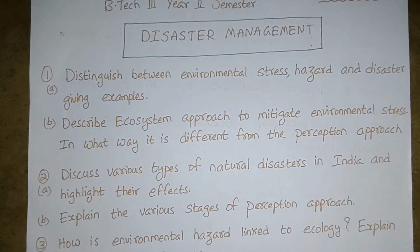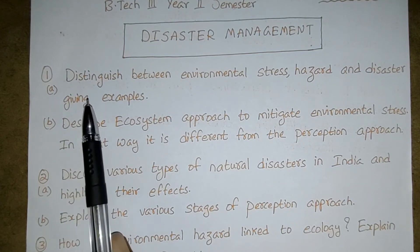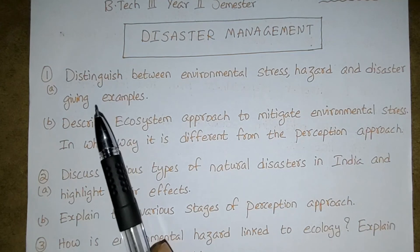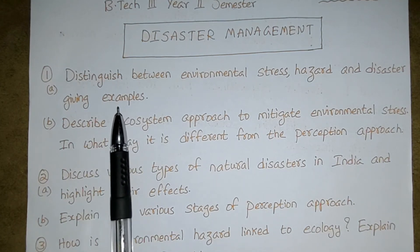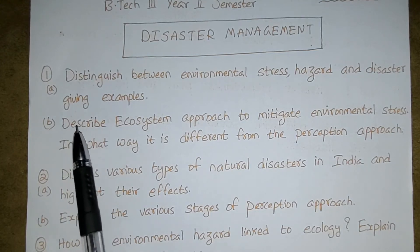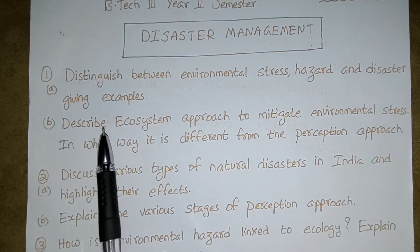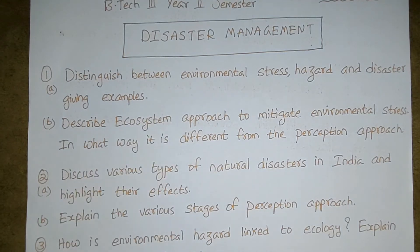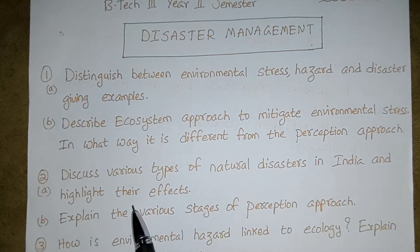If you observe carefully, not even a single question is asked for full 15 marks in this Disaster Management paper. Even though it is a theory paper, each question has two sub-questions — one for seven marks and another for eight marks. So the entire question paper consists of (a) and (b) parts.